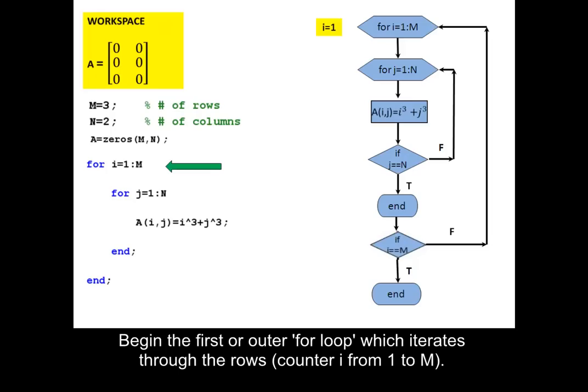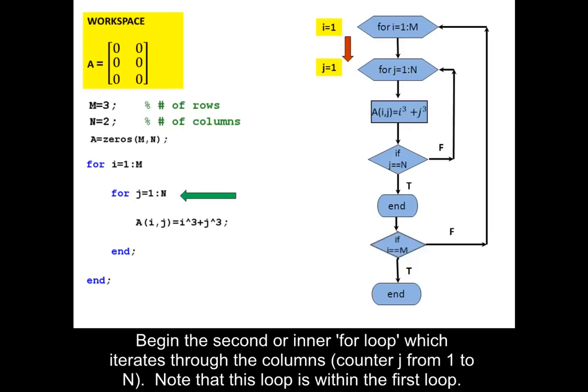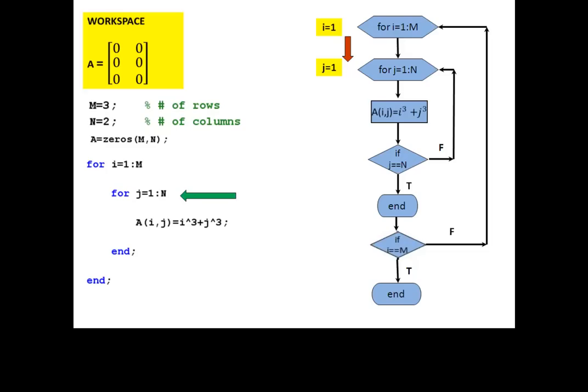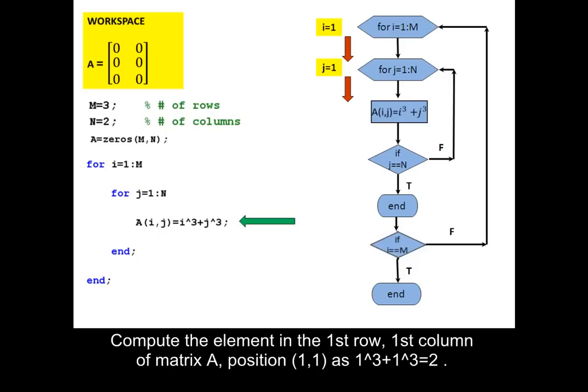Begin the first or outer for loop which iterates through the rows, counter I from 1 to M. Note that the inner loop is within the first loop. For the first iteration I equals 1, first row, and J equals 1, first column. Compute the element in the first row, first column of matrix A, position (1,1), as 1 cubed plus 1 cubed equals 2.